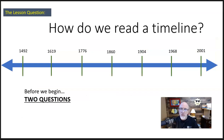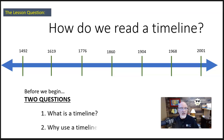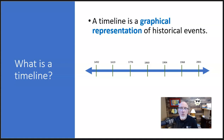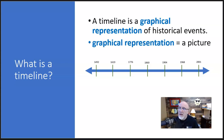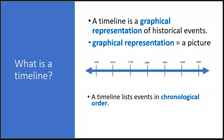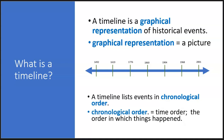Let's talk about that question: how do we read a timeline? But before we begin with that, let's look at two other questions. First, what is a timeline? And why use a timeline? A timeline is a tool to help us study history. It's a graphical representation of historical events — which really just means it's a picture. And a timeline gives us events in chronological order, which means it's in time order, or the order in which things happened.